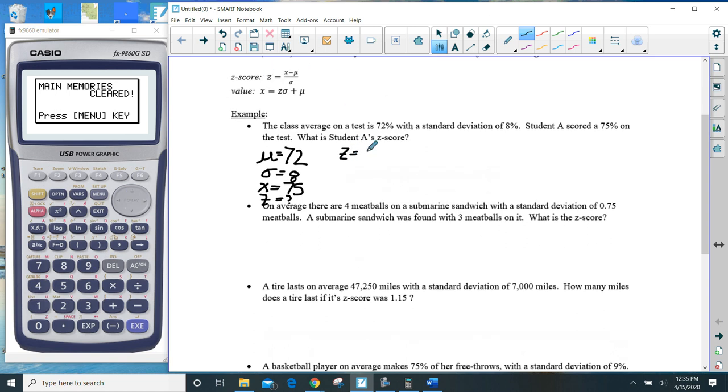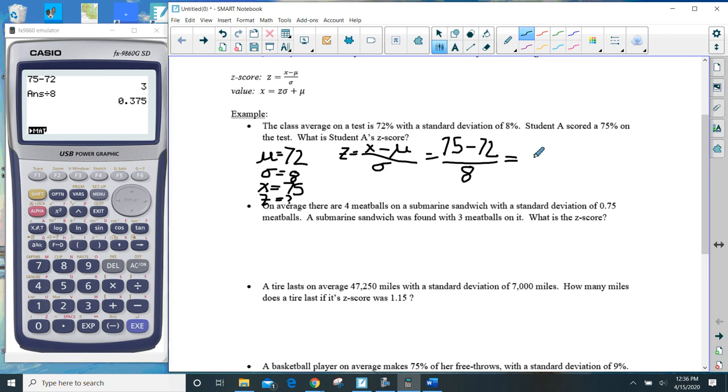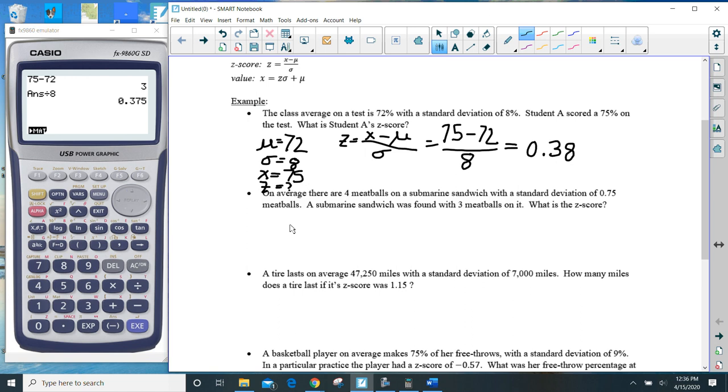So Z is equal to, I'm following the formula right up here, X minus mu divided by sigma. So in that situation, that would be X minus mu divided by sigma. So that would be 75 minus 72 divided by 8. And this Z-score would be 0.38. Z-scores go to two decimal places. So if you want to say 375, I really don't care. Just that is what the Z-score is, 0.38 or 0.375. Wonderful.